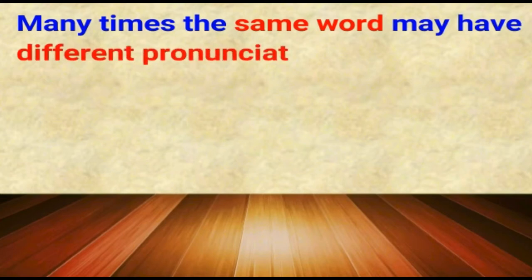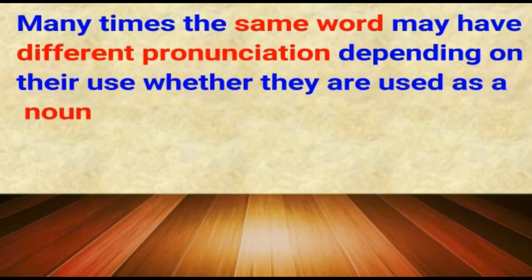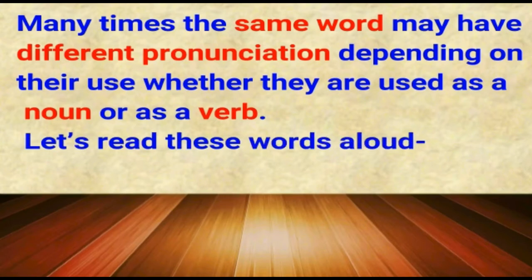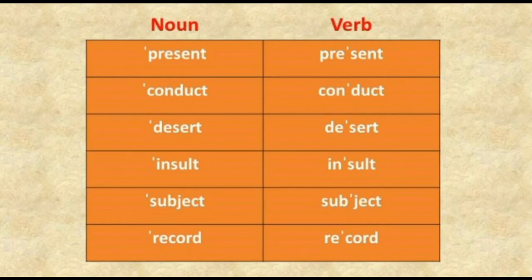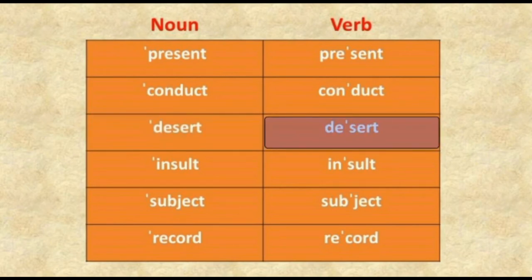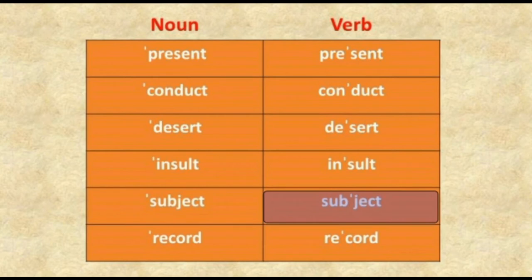Many times, the same word may have different pronunciation depending on their use — whether they are used as a noun or as a verb. Let's read these words aloud: present, present. Conduct, conduct. Desert, desert. Insult, insult. Subject, subject. Record, record.